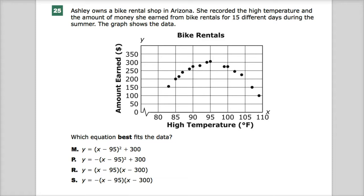The question says Ashley owns a bike rental shop in Arizona. She recorded the high temperature and the amount of money she earned from bike rentals for 15 different days during the summer. The graph shows the data, so I look here and I get a general feel for Ashley's business. It looks like there's a prime time or prime temperature for people wanting to rent a bike.